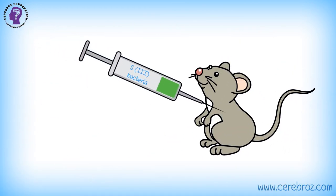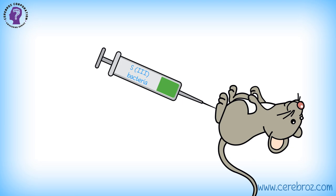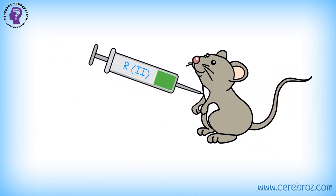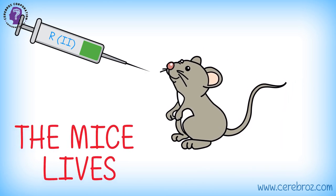When the virulent S3 bacteria was injected in mice, it killed them, causing pneumonia. But when the avirulent R2 was injected in mice, the mice lived.